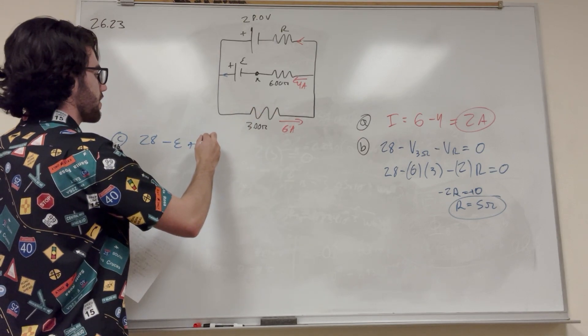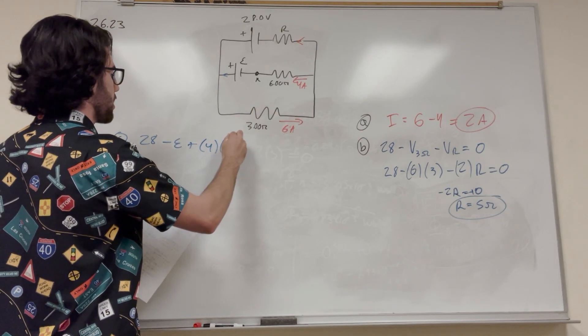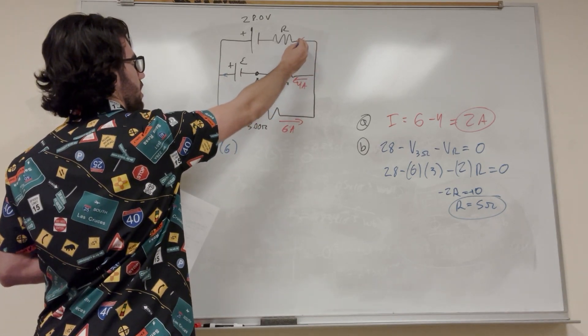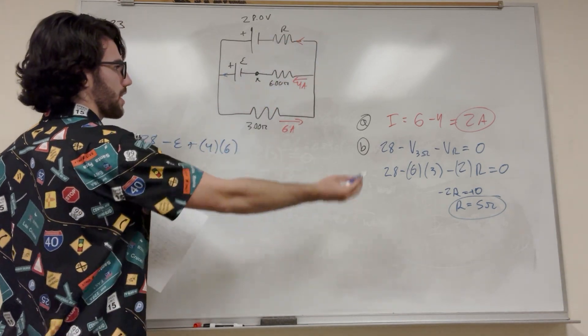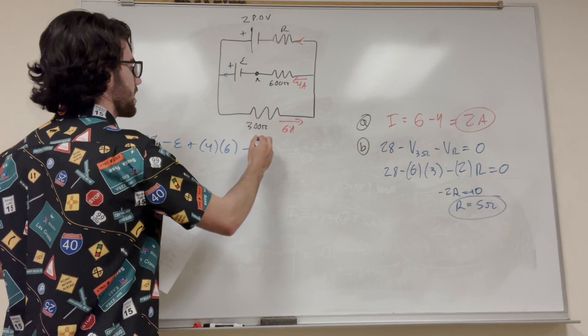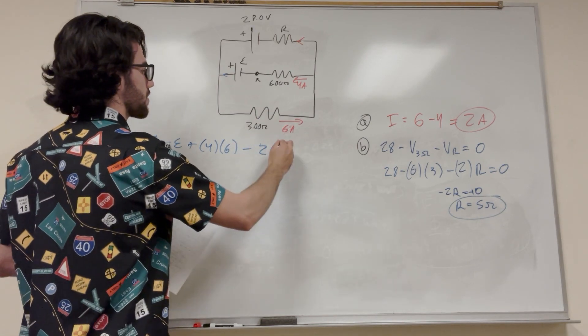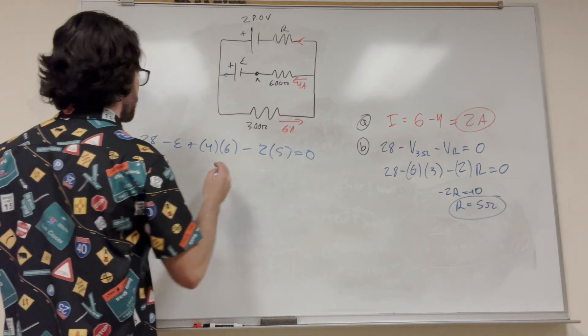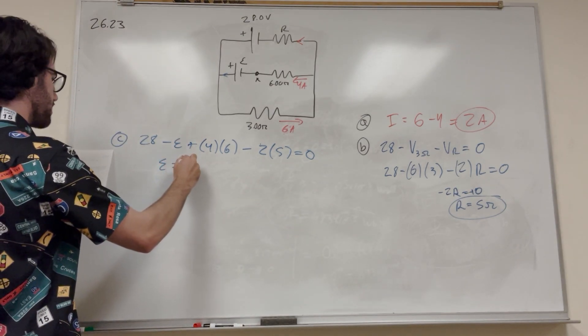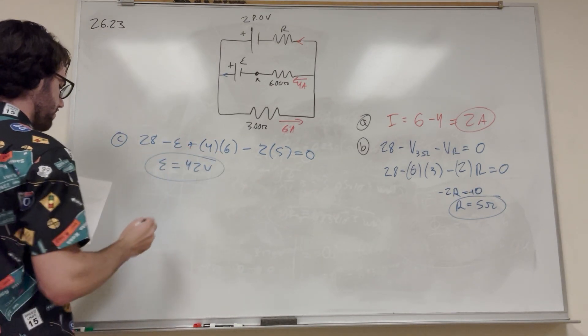So current, 4 amps. Resistance, 6 ohms. And then we're going to finish the circuit, go up through this resistor. So we found that I is equal to 2. It's going to be minus 2, and then the resistance is 5. And all of this is going to be equal to 0. If you do the math on this, you're going to get epsilon is equal to 42 volts. Nice.